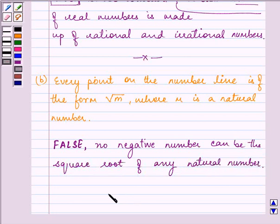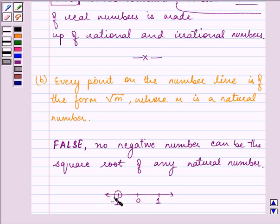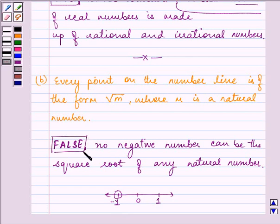We know that on a number line we have both positive and negative integers. Every point on the number line means we can have negative numbers also, but a negative number cannot be expressed as a square root of a natural number. Hence, this is a false statement.